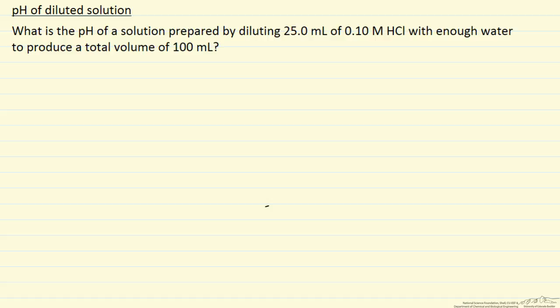The first thing we want to do is determine the number of moles per liter, so we can then use the equation to calculate the pH, and we are going to do that by first determining how many moles of HCl.